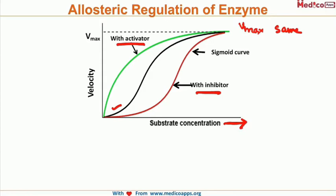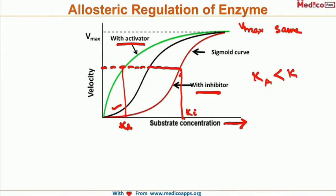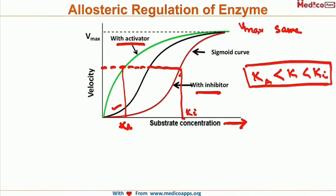The second point is about Km. Km is the substrate concentration at half Vmax level. The Km is maximum with inhibitor and minimum with activator. So remember: Km is minimum with activator, then normal, and maximum with inhibitor. These two points — Vmax and Km behavior — are key things to remember about Allosteric Regulation of enzyme curves.